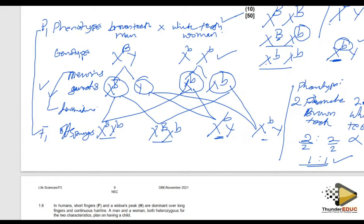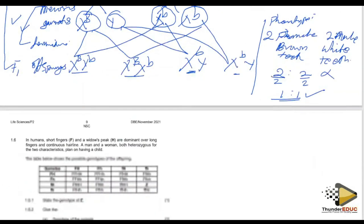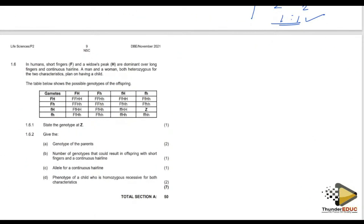If you have any challenge with this question, please let me know in the comments. Today's lesson is a mixture of a dihybrid cross and a pedigree. I also included one question for blood group. Within one hour the class will be done.